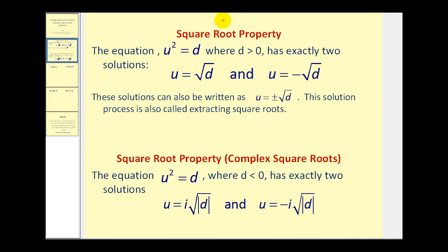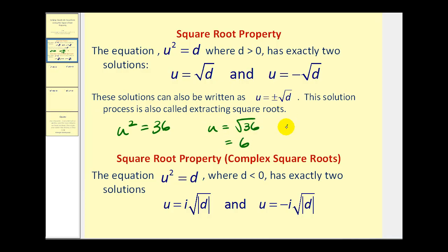For example, if we had U squared equals 36, then U would equal the positive square root of 36, which is 6, and U would also equal the negative square root of 36, which is negative 6. Remember, if we square negative 6, we still get positive 36. So we'll have a positive and a negative solution.